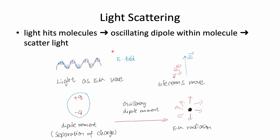Let's recap how light scattering works. Imagine you have some particles and light hitting them. Light can be understood as an electromagnetic wave — it has a magnetic field component and an electric field component. When light hits particles, there are electrons in the particles, and in the presence of the electric field, the electrons in the particles will move. This moving of the electrons causes a separation of charges, called the induced dipole moment.